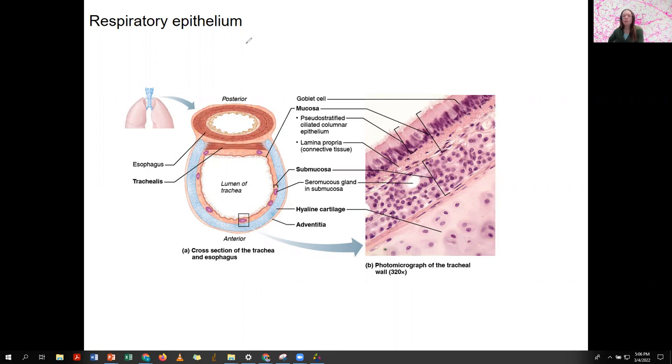Respiratory epithelium is one place where there is mucous membrane. Epithelium is the surface with those epithelial cells. We're going to talk about the respiratory membrane in a little bit. This is different. This is mucous membrane.